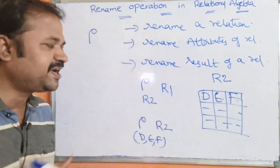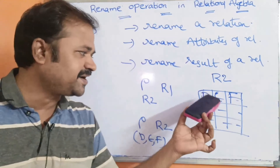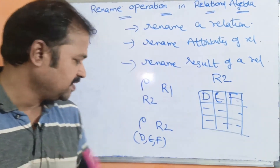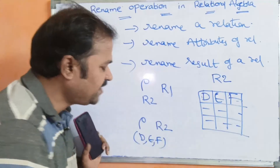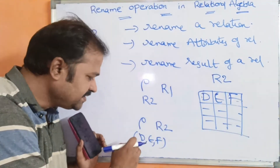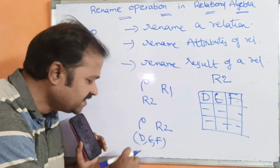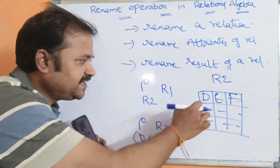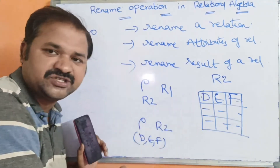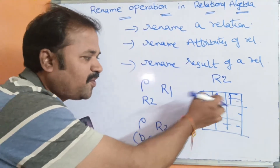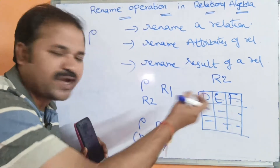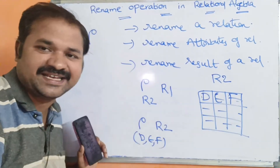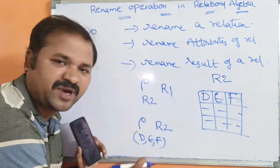If you want, we can modify just one attribute or two attributes. If you want to modify only one attribute, you can specify G, so D will be changed to G. If you want to modify two attributes, D and E as G and H, then we write G, H — so D and E will be modified to G and H.